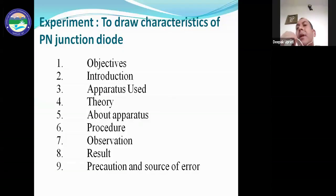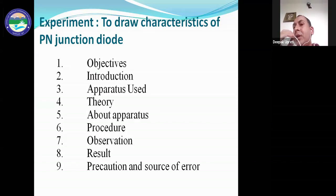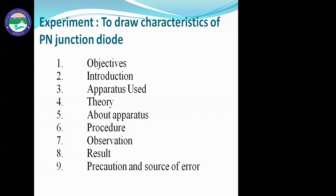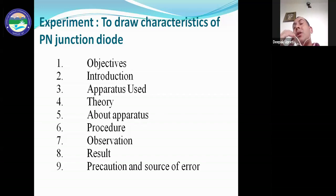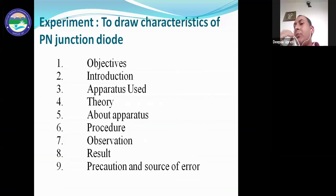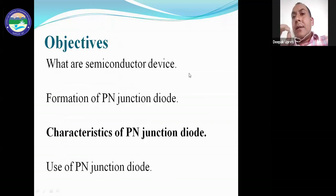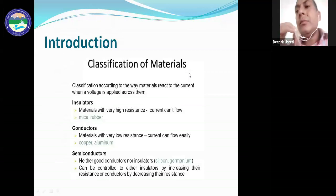In this experiment, the main part is to draw the characteristics of the p-n junction diode. We will discuss our objective, the introduction about semiconductors and p-n junction diodes, apparatus used, theories involved, procedures to follow, and observations.